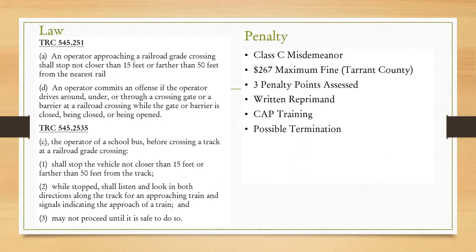The Texas Transportation Code — the TTC — states that an operator approaching a railroad grade crossing shall stop no closer than 15 feet and no farther than 50 feet from the tracks. An operator commits an offense if the operator drives around, under, or through a crossing gate or barrier at a railroad crossing while the gate or barrier is closed, being closed, or being opened. If you see that gate come down, do not try to cross it until it is completely up.